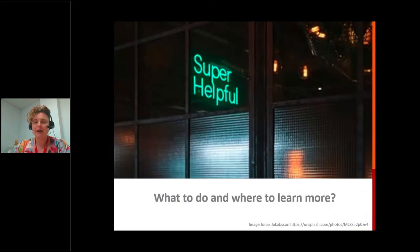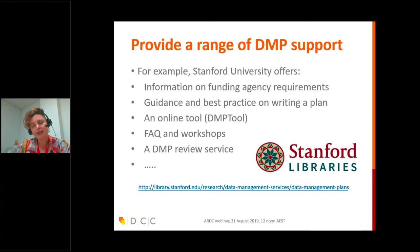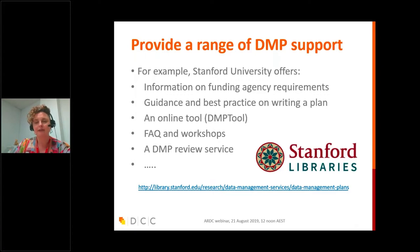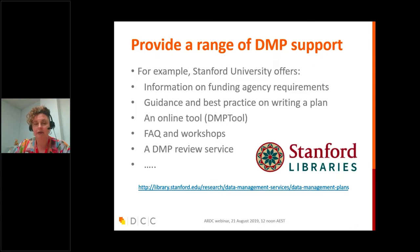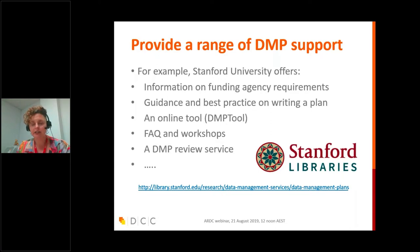If you're engaging in data management plans, it's good to offer a range of services — not just one tool or one approach, because researchers will vary and want different types of support. Stanford University, for example, provides information on different funding agency requirements, good practice guidelines, an online tool, FAQs, workshops, and also a DMP review service where people can submit their plan and get feedback. Offering this kind of range of different types of support is important.